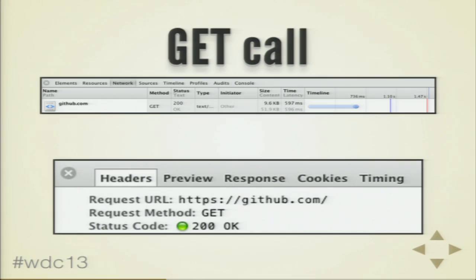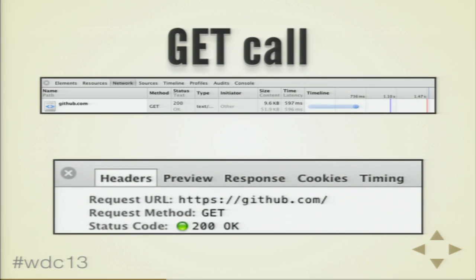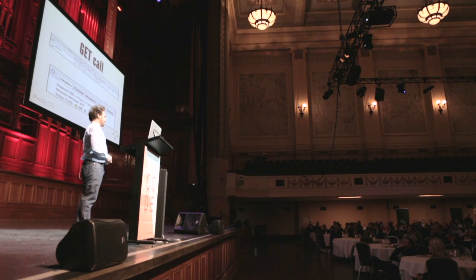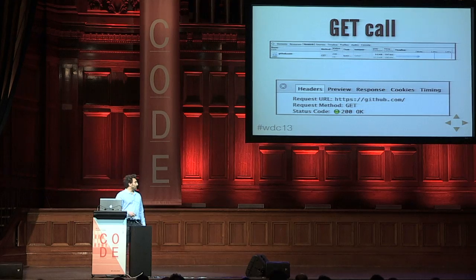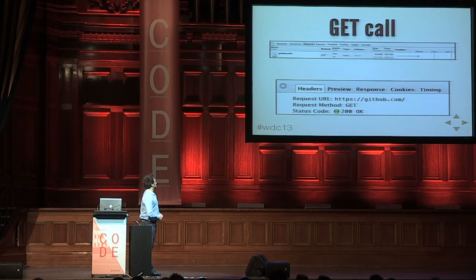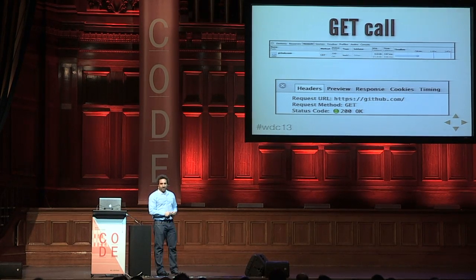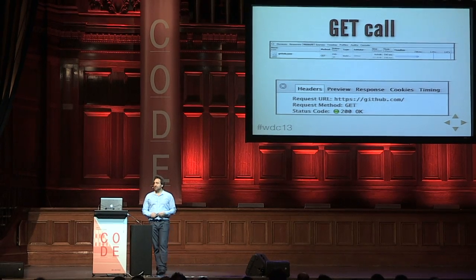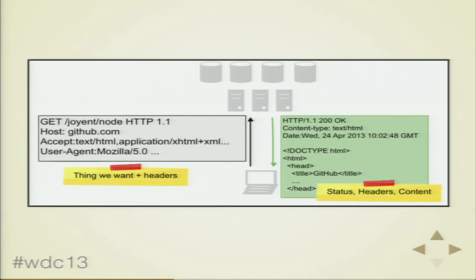If you actually look at what happens when you click on a link or type a URL into your browser, you can open up DevTools and actually see these calls take place. This is how the browser interprets your desire to see that web page. You can see we've got the request URL and a method. With REST we have methods — in this case we use a GET method to say 'show me that thing.' And it comes back with a response code of 200, meaning okay, so you can actually show the content.